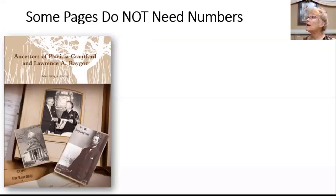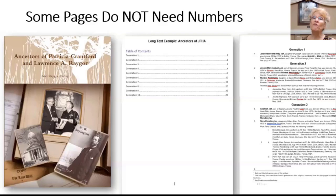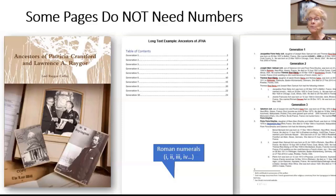Some pages do not need numbers. The front and back covers are not numbered. Initial content you may add, like a foreword, dedication, or table of contents, will appear before the numbered pages of the main content. Those initial pages can be labeled with lowercase Roman numerals, or not numbered at all. Word will help you do whichever you choose.